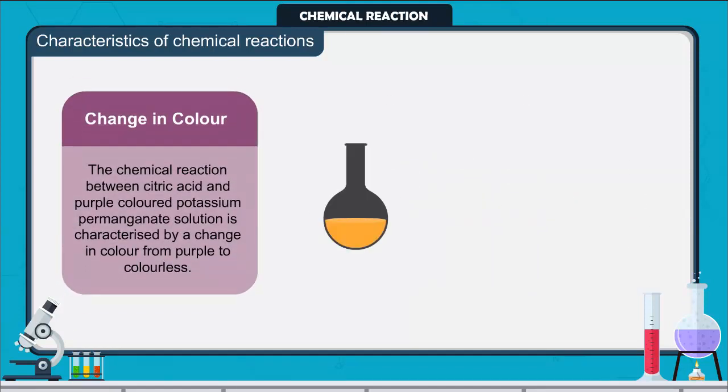Change in color: The chemical reaction between citric acid and purple colored potassium permanganate solution is characterized by a change in color from purple to colorless.